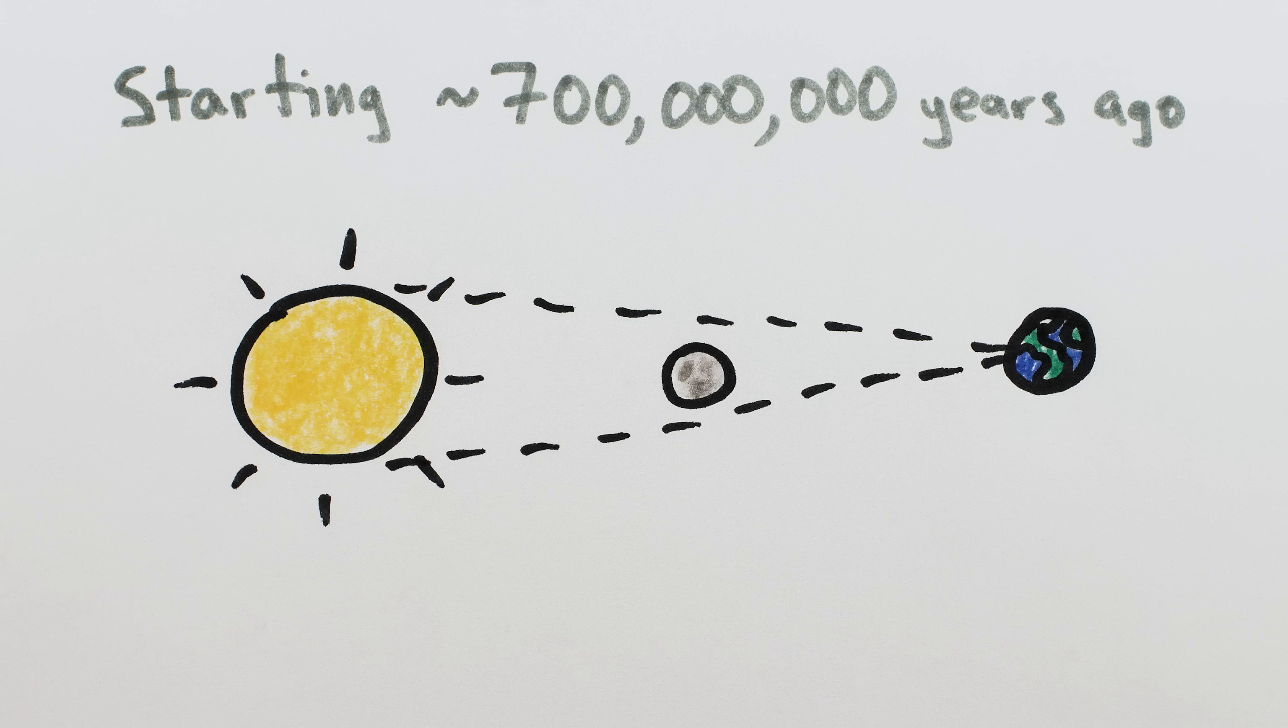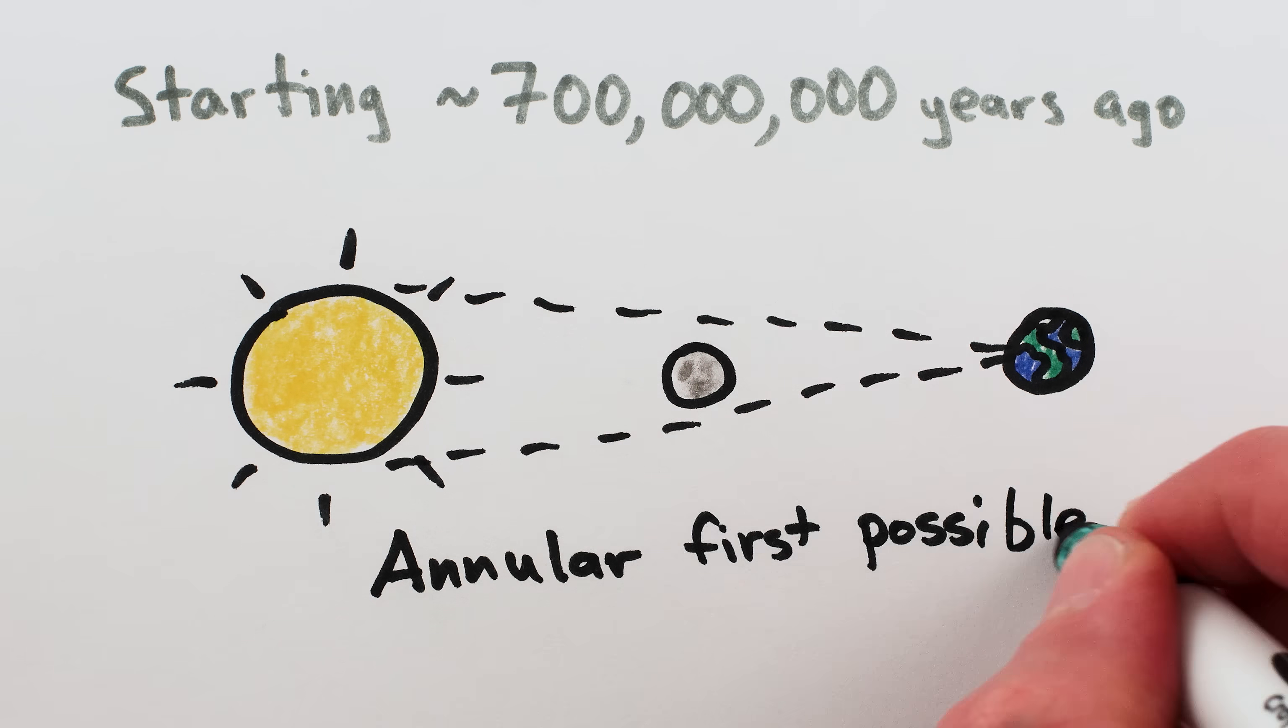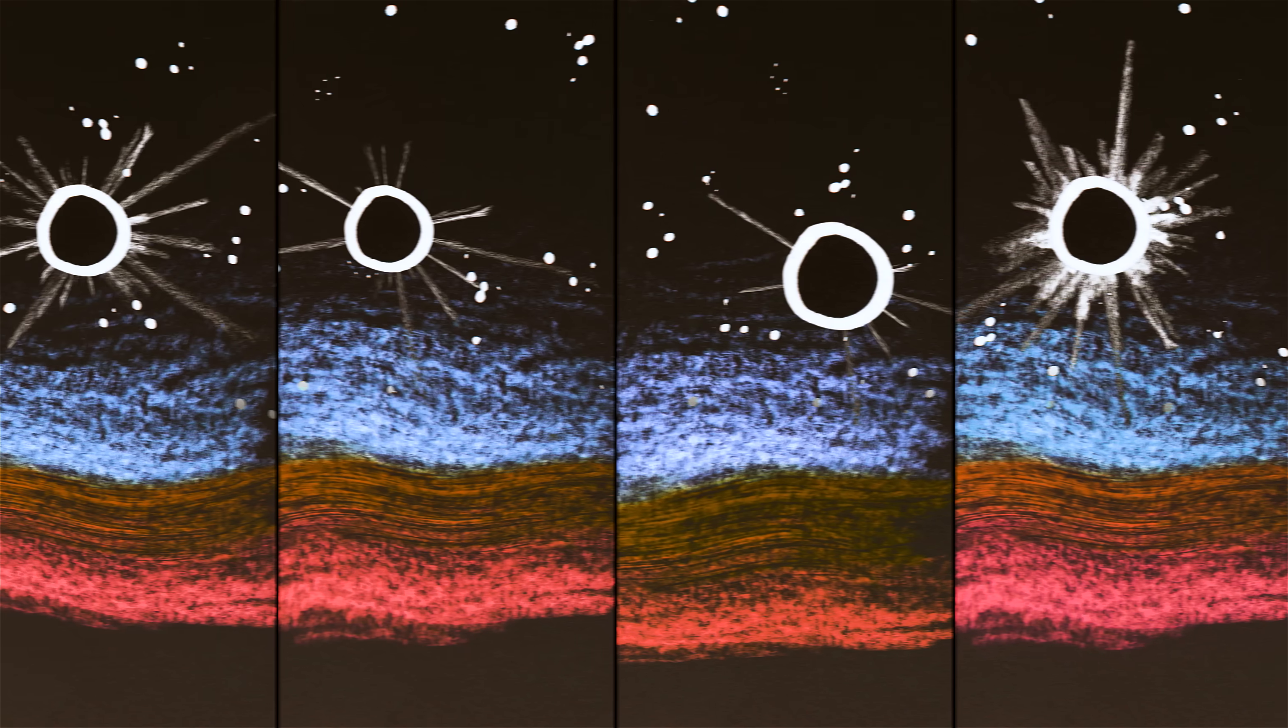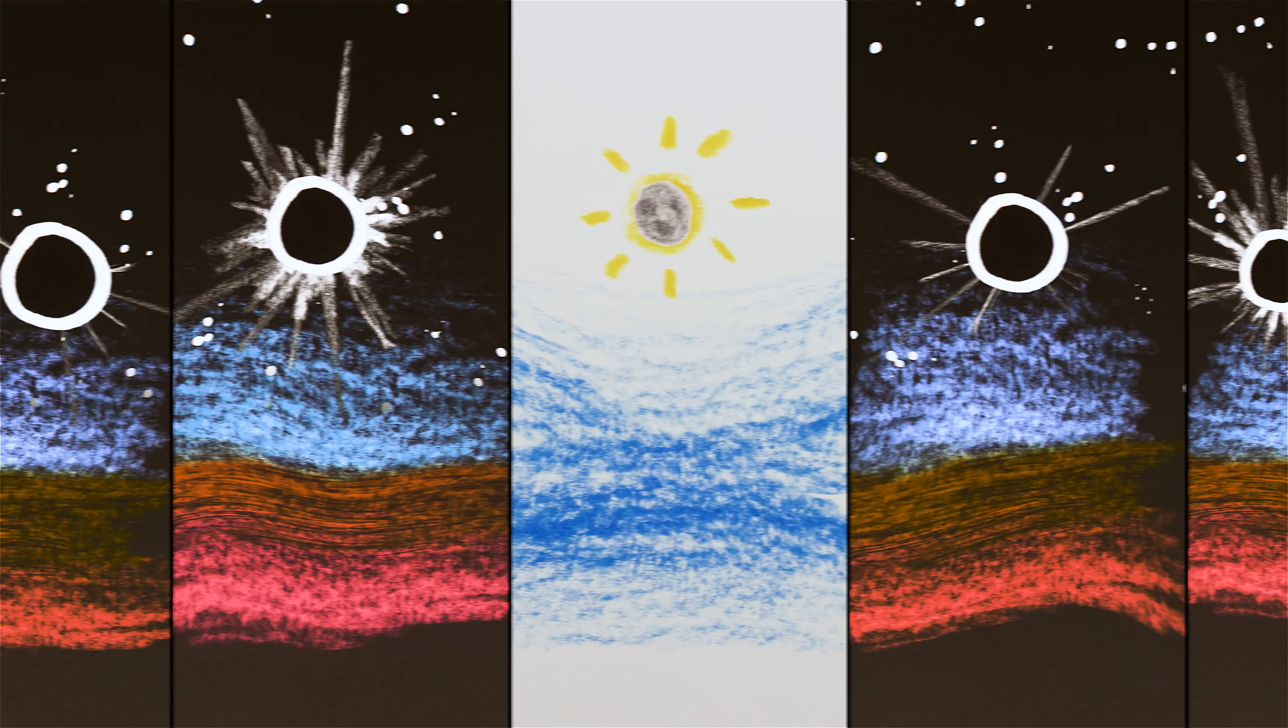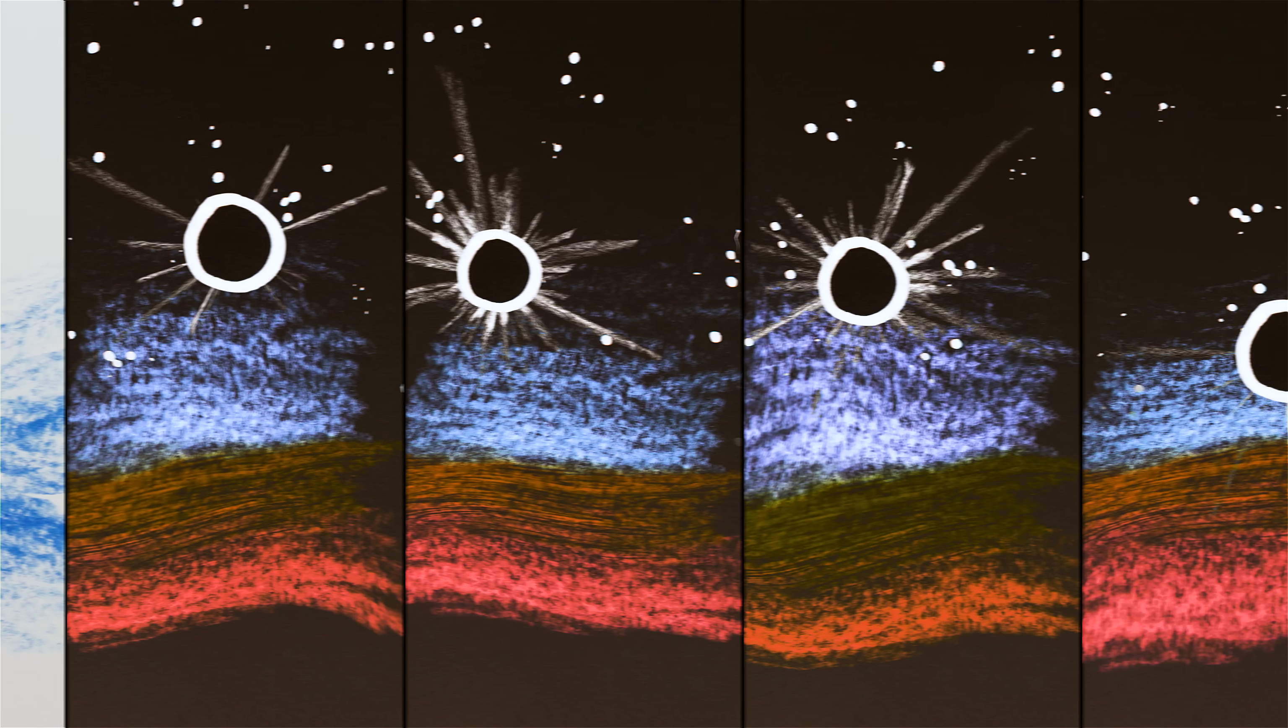And if it appeared smaller than the sun during an eclipse, it wouldn't fully block the sun. You'd get an annular eclipse, not a total one. Initially, most eclipses would still have been total solar eclipses, with annular eclipses being rare.